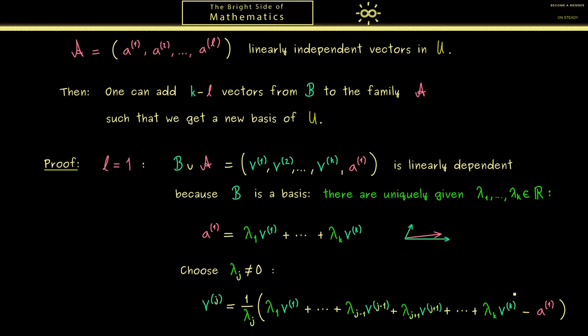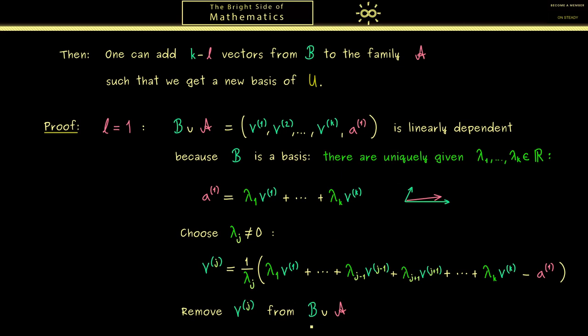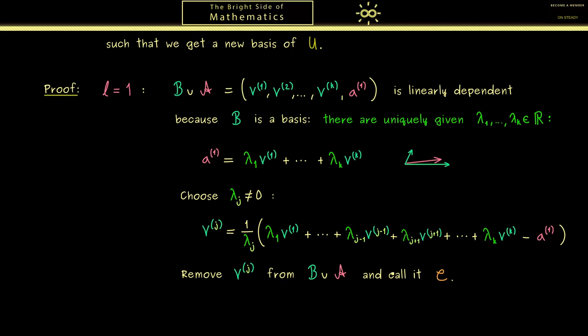Okay, now we're having this linear combination. We know we can drop v^j from the family here without losing any information. Or more precisely, what we want to get is the linear independence now. And for this, let's call the new family we get here C. In fact, what we now can show is that this new family C is a basis for our subspace U as well.